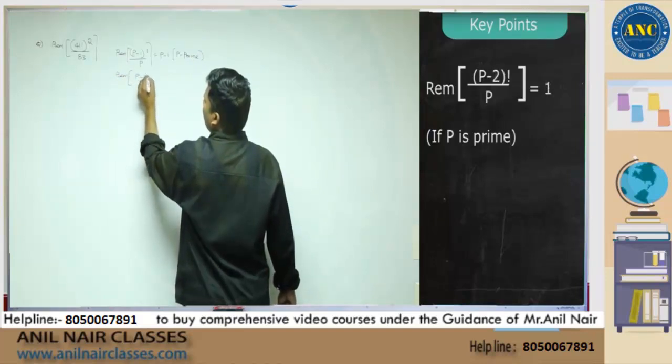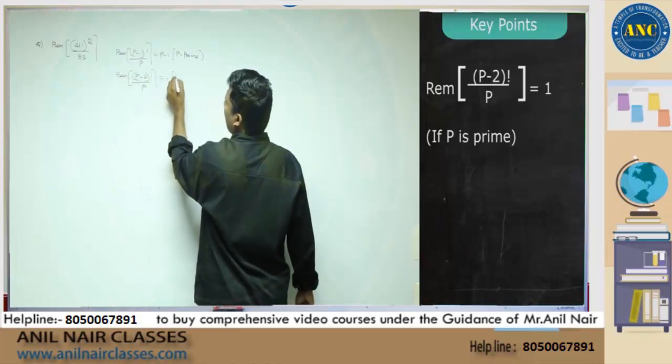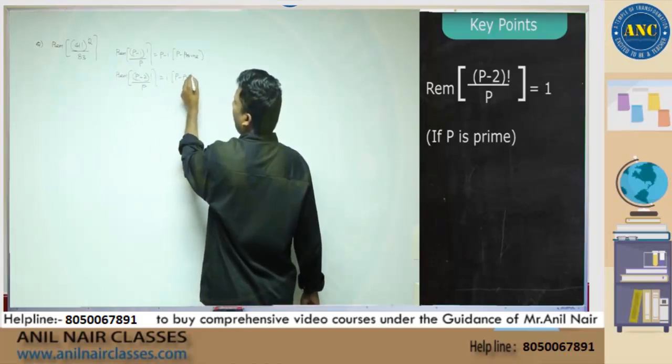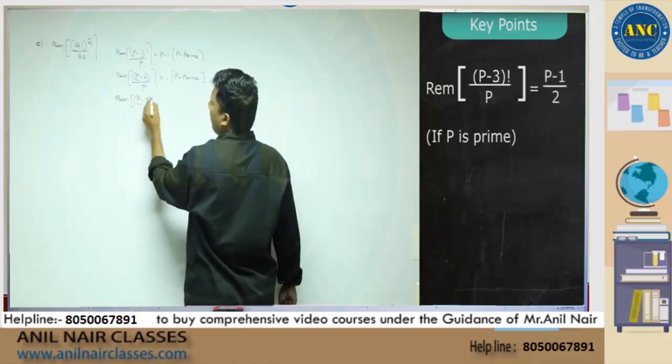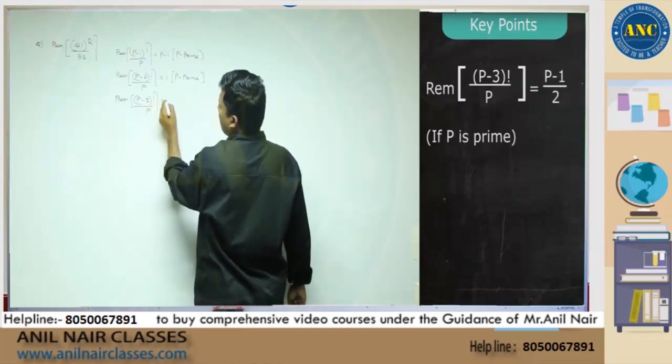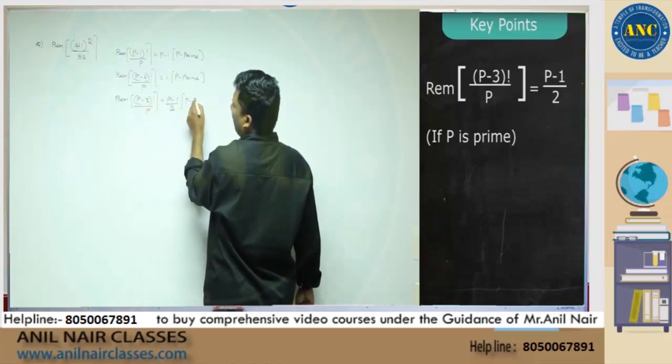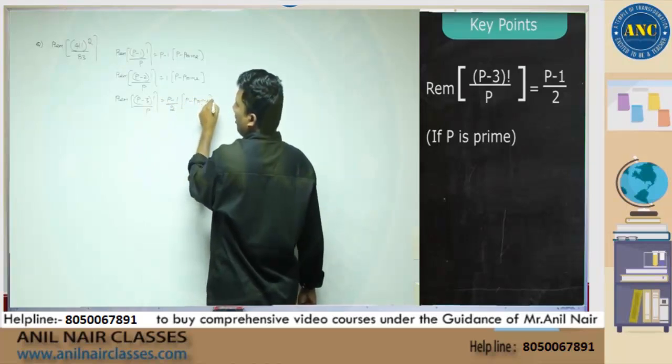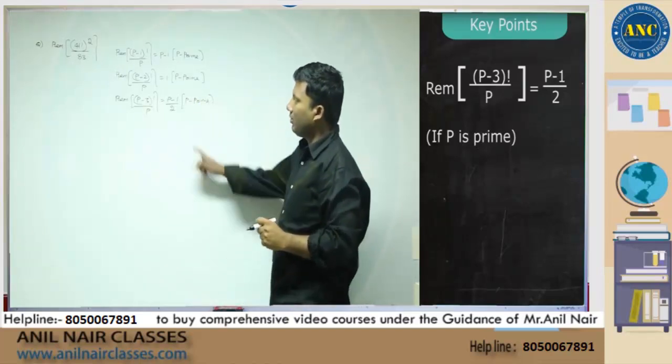P minus 2 factorial divided by P is always 1 when P is prime. Reminder 1. P minus 3 factorial divided by P is P minus 1 by 2 whenever P is prime. These are some important key points with respect to Wilson's theorem.